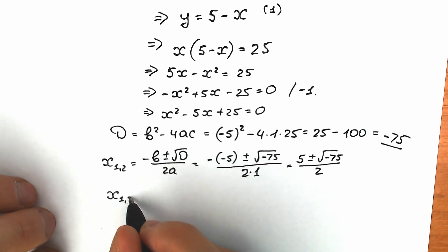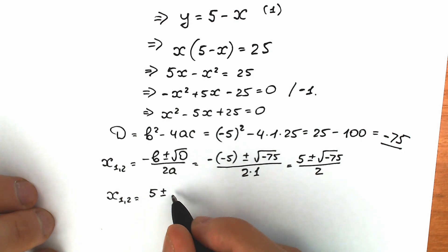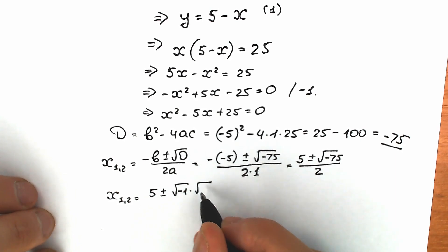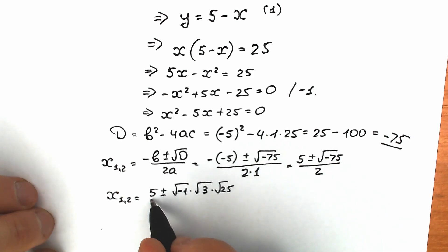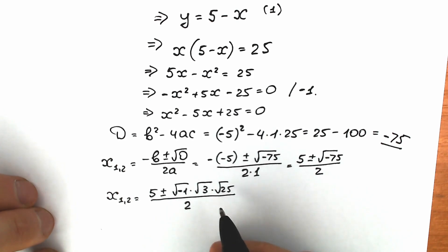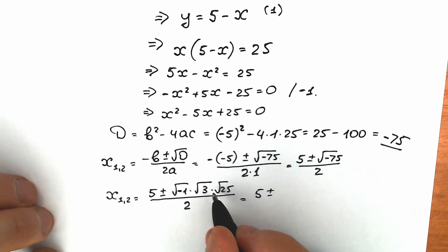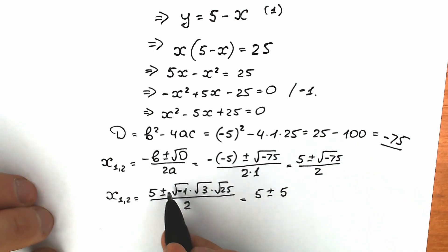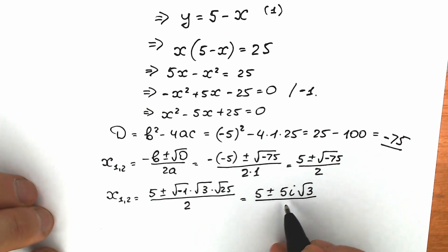Let's simplify: we have 5 plus or minus the square root of minus 75, all over 2. We can express minus 75 as the product of minus 1, 25, and 3. In terms of square roots we can split it into three parts: square root of minus 1, times square root of 25, times square root of 3, all divided by 2. Square root of 25 equals 5, and square root of minus 1 is our imaginary unit i.